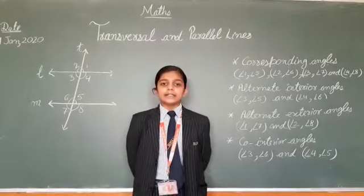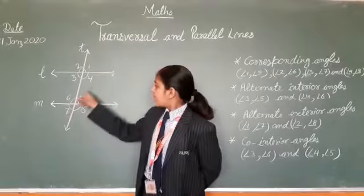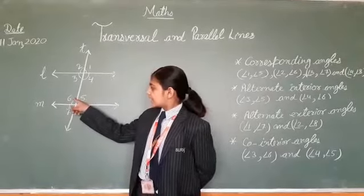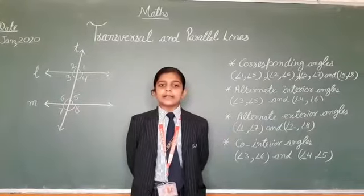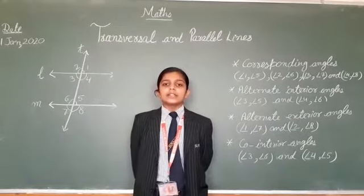Second, alternate interior angles: angle 4 and angle 6, angle 3 and angle 5. Each pair of alternate interior angles are equal.